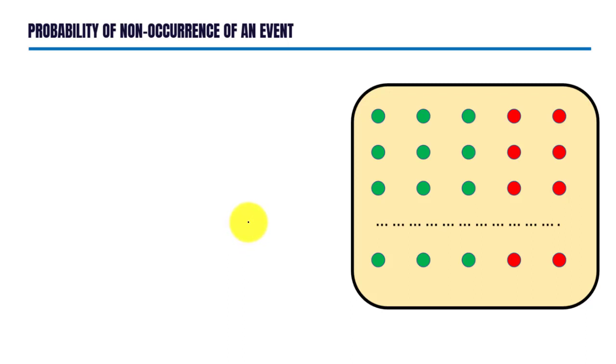Hello viewers, welcome to Number X. In this lecture we will learn how to find probability of non-occurrence of an event. Let us consider that there are n circles enclosed in this box.